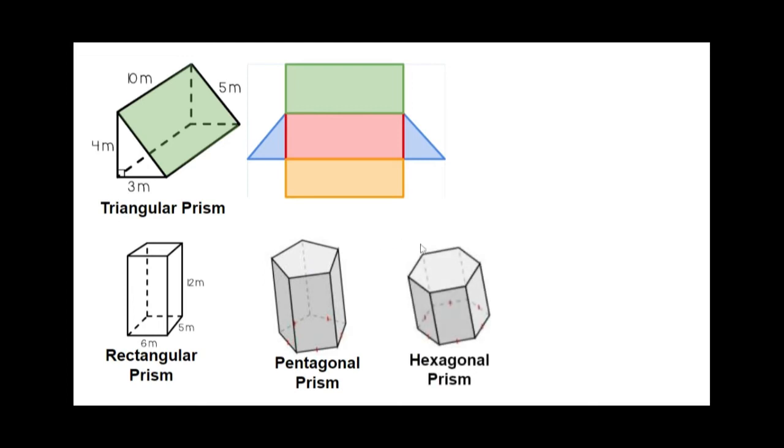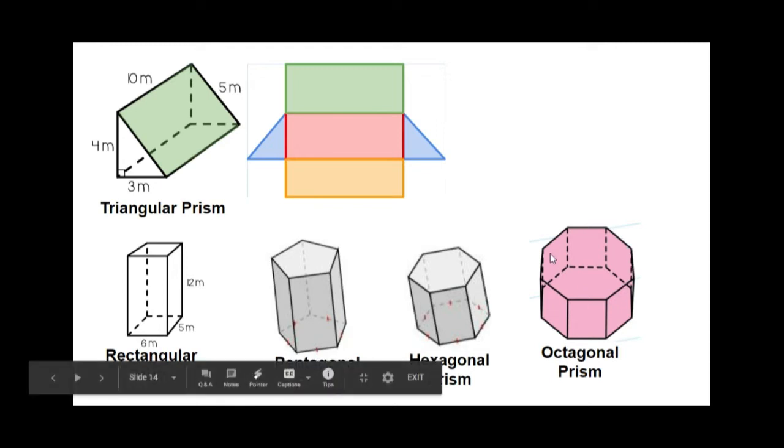We've also got a hexagonal prism. It's got hexagon bases which have six sides which means we're going to have six rectangles connecting the two bases. We've got octagonal bases, eight sides which means eight rectangles connecting the bases.